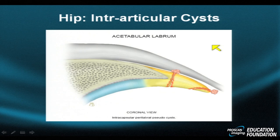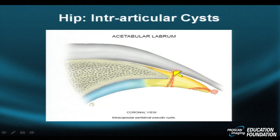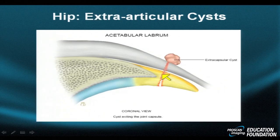Sometimes tears, just like their counterparts in the shoulder and other parts of the body, may produce paralabral pseudocysts. A pseudocyst is a proteinaceous fluid collection without an epithelial lining. Sometimes those pseudocysts sit within the capsule — we call them intraarticular pseudocysts. These globular lesions are always a sign of a labral tear. Sometimes they break through the capsule, in which case we refer to them as extracapsular cysts or, strictly speaking, pseudocysts, as they are not epithelially lined.